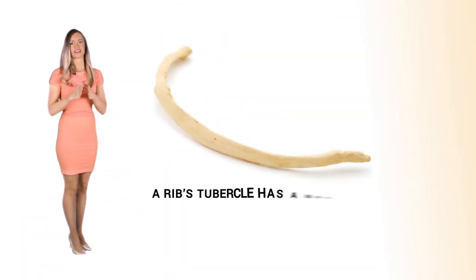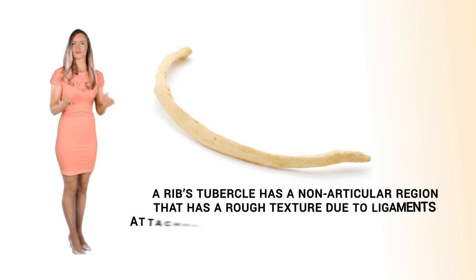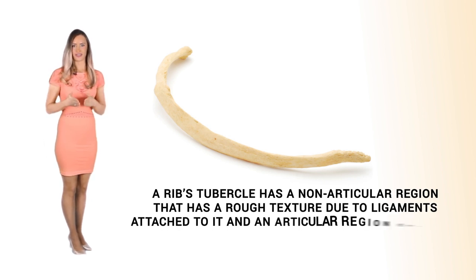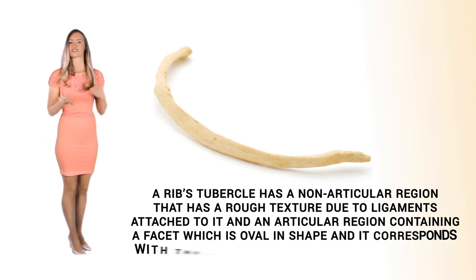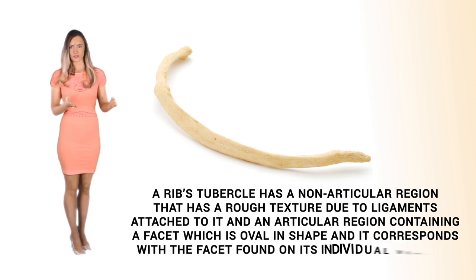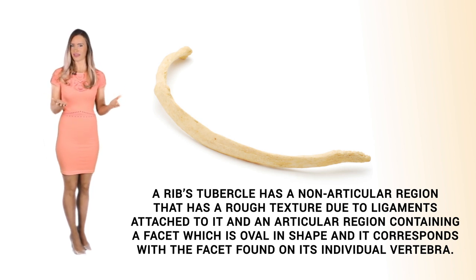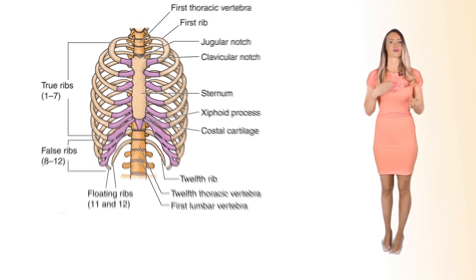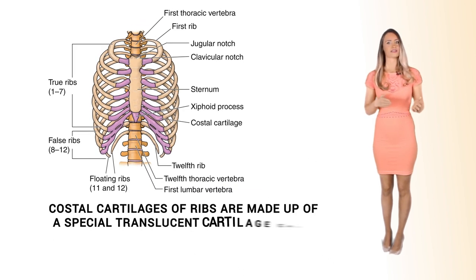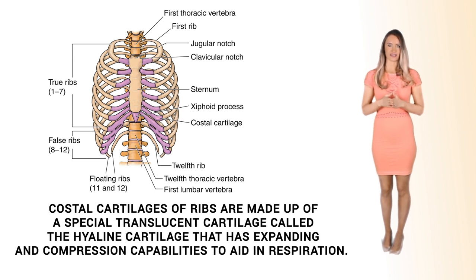The head of the rib articulates to the vertebra's transverse process with the tubercle. A rib's tubercle has a non-articulation region that has a rough texture due to ligaments attached to it, and an articular region containing a facet which is oval in shape, and it corresponds with the facet found on its individual vertebra. Costal cartilages of ribs are made up of special translucent cartilage called hyaline cartilage, which has expanding and compression capabilities to aid in respiration.